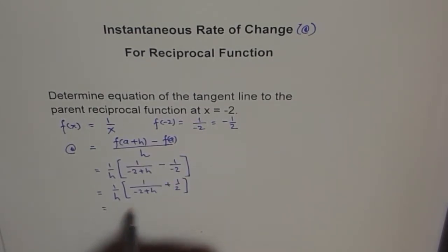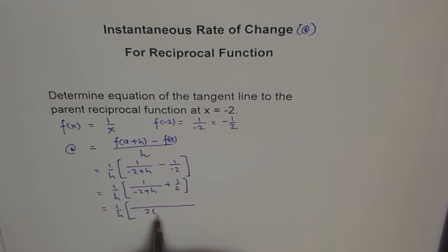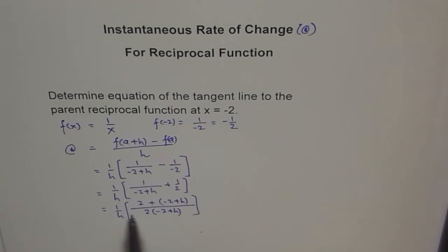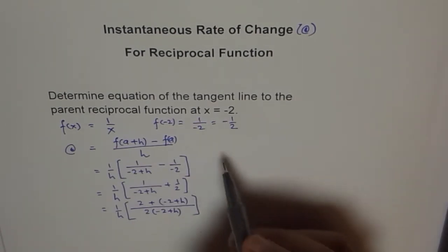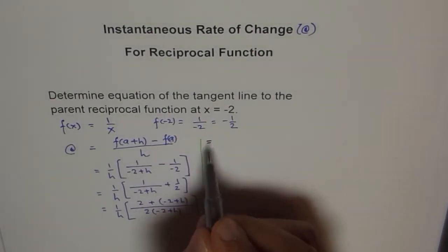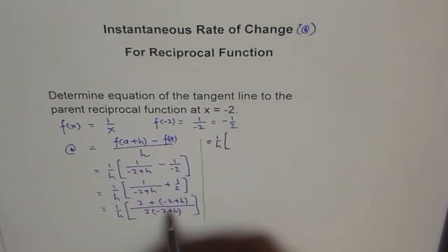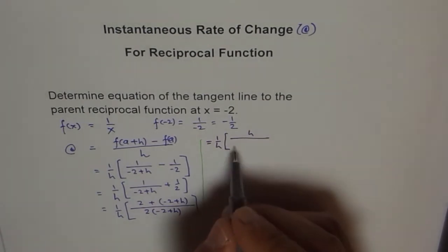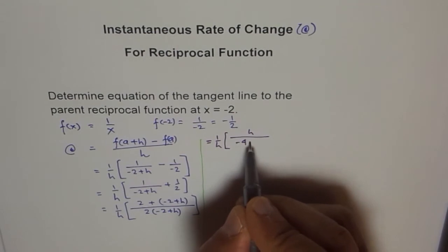We take a common denominator, which is 2 times negative 2 plus h. So we get 1 over h times the quantity 2 over 2 times negative 2 plus h, plus negative 2 plus h over 2 times negative 2 plus h. In the numerator, 2 minus 2 equals 0, and we are left with just h, giving us h over 2 times negative 2 plus h, which equals h over negative 4 plus 2h.